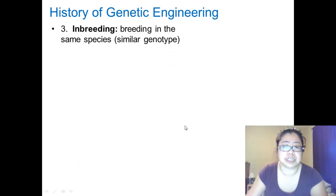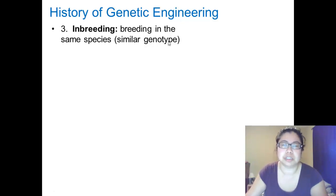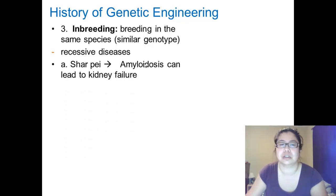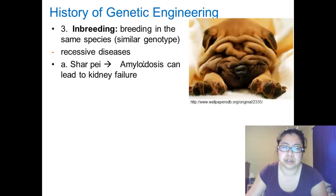The third type is inbreeding — breeding within the same species. It's very important that inbreeding is only successful with similar genotypes; if the genotypes are too divergent, the species won't be able to have successful offspring. Inbreeding will incur a lot of recessive diseases. Let's take dogs again as an example, since it is well documented. Shar-Peis, like this cute little Shar-Pei here, have amyloidosis, which can lead to kidney failure.